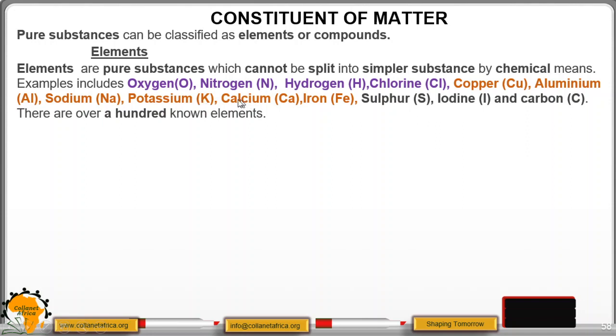Potassium, capital K; calcium, Ca; iron, Fe; sulfur, capital S; iodine, capital I; and carbon, capital C. There are over a hundred known elements. So these are just few examples.